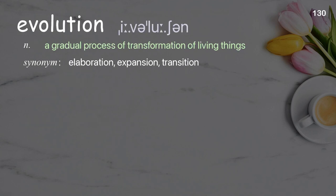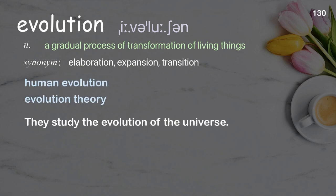Evolution: a gradual process of transformation of living things. Examples: human evolution, evolution theory. They study the evolution of the universe.